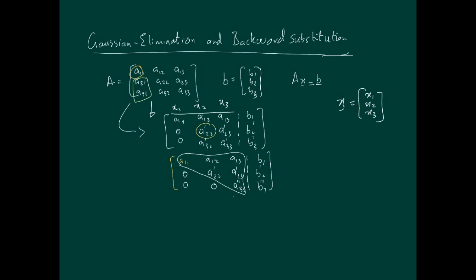So this means if I go back, if I go over here, I can write this down as a33 double dash of x3 equals b3 double dash. This implies that x3 now can be easily calculated.